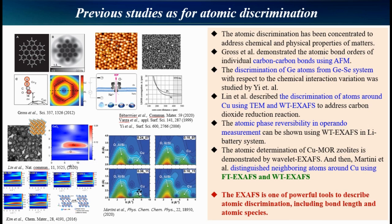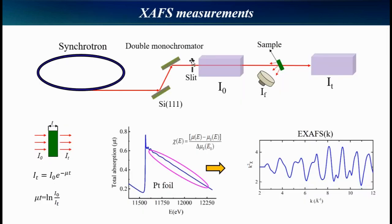Now, I'd like to explain EXAFS measurement and reduction of data to get chi-EXAFS as a function of K. The X-ray comes from synchrotron and goes to double monochromator. After picking X-ray what you want, it passes through I0 chamber.